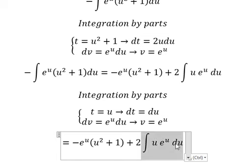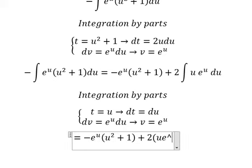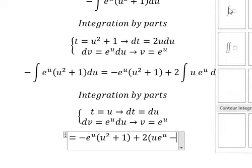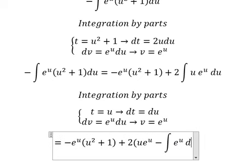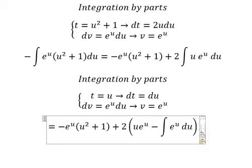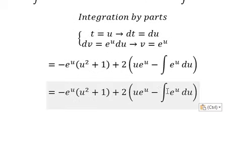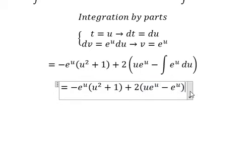For this we have t times v, so we have u e to the power of u, minus the integral of v dt. So we have the integral of e to the power of u du. The integration of this is e to the power of u, and we add the constant C.